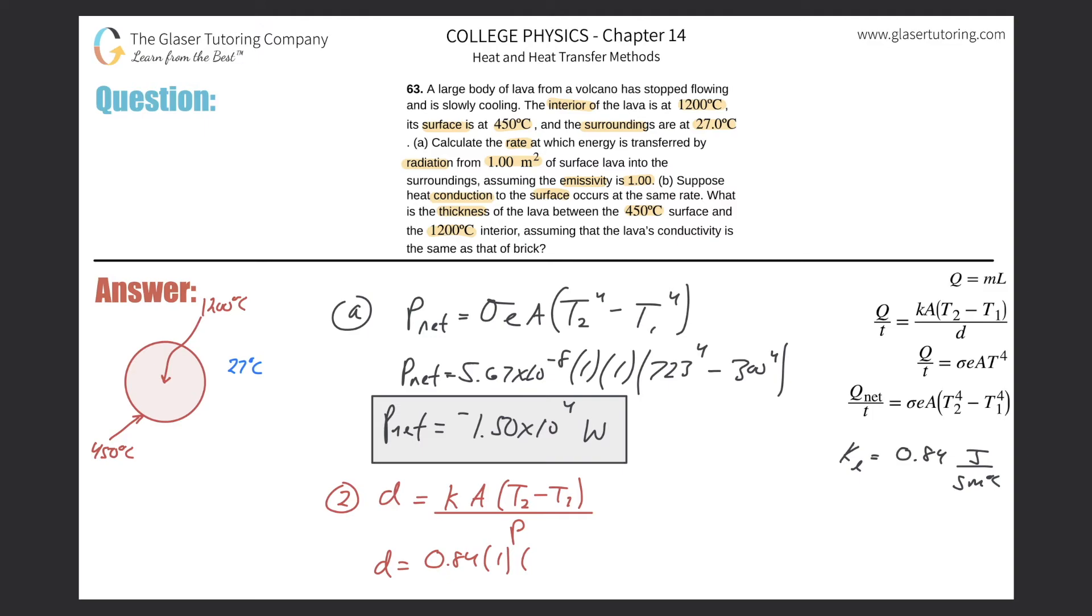The difference between the two temperatures—you can just do the absolute value or just find the positive answer—so this is going to be 1200 minus 450, and then all divided now by the power, which is what we found before, which is about 1.50 times 10 to the fourth.